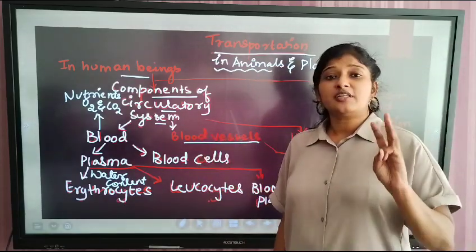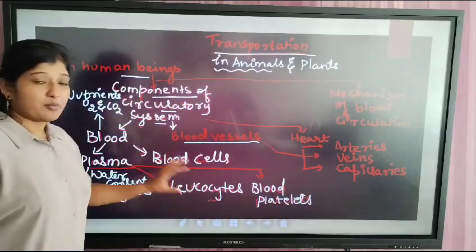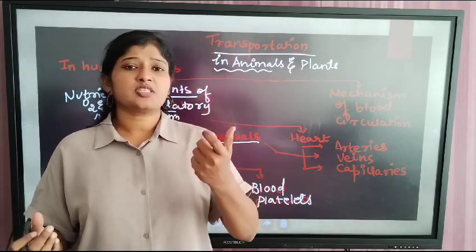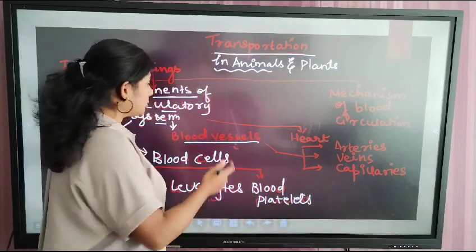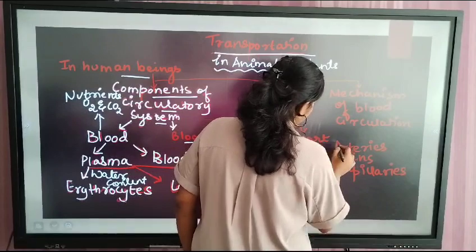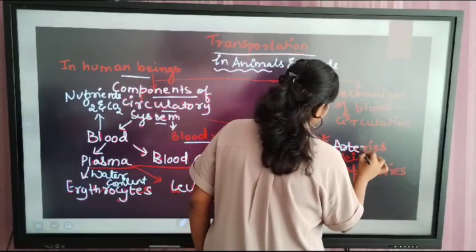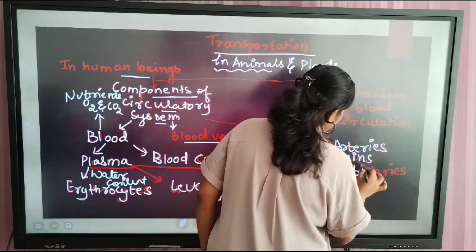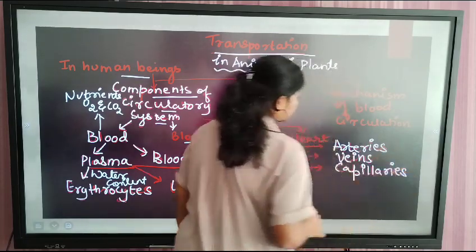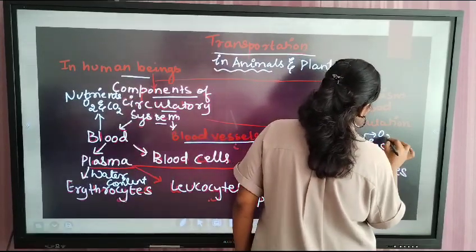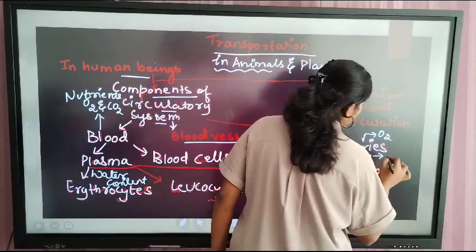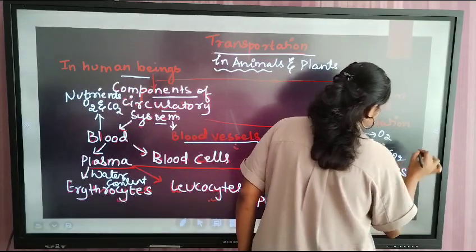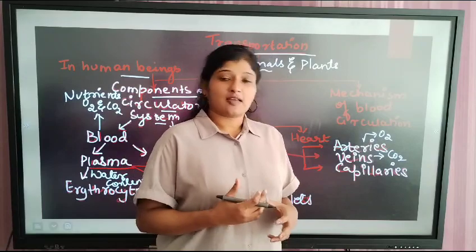Next, three different types of blood vessels are there. To transport blood cells and plasma through the body, a tube system — the vessel system — is needed. These vessels are of three types: arteries, veins, and capillaries. Arteries carry oxygenated blood, veins carry deoxygenated blood — that is, carbon dioxide-oriented blood. The deoxygenated blood is carried by the veins.